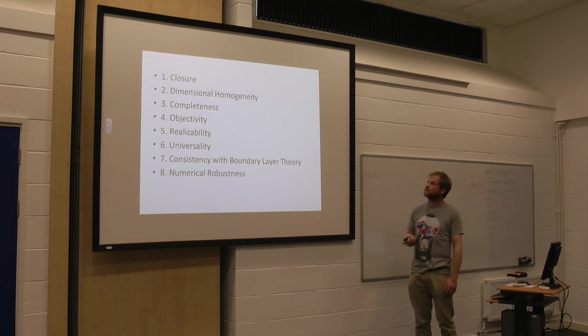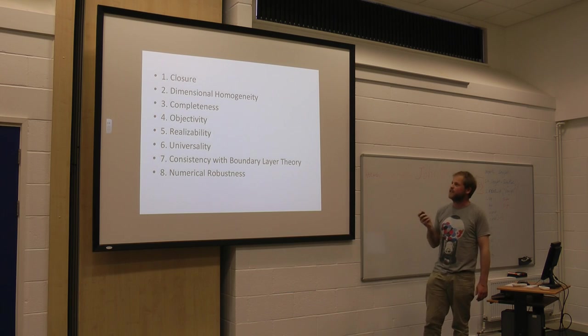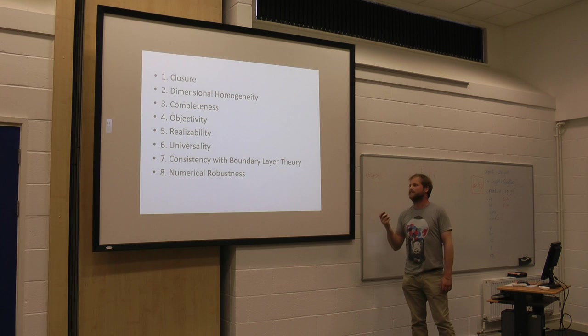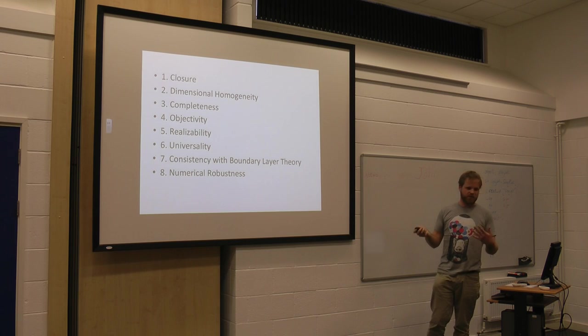So the question is, how do we build a turbulence model for this thing? There are eight rules. They are closure, dimensional homogeneity, completeness, objectivity, realizability, universality, consistency with asymptotic theory, and numerical robustness. I can't go through all of them. Don't worry. We'll go through a couple of them.